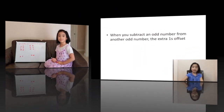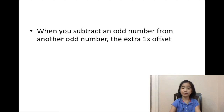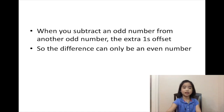So now, let's make it clear. When you subtract an odd number from another odd number, the extra ones offset. So the difference can only be an even number.